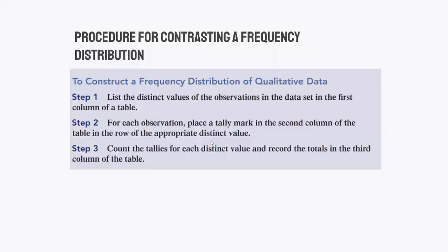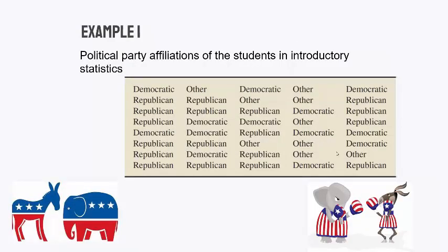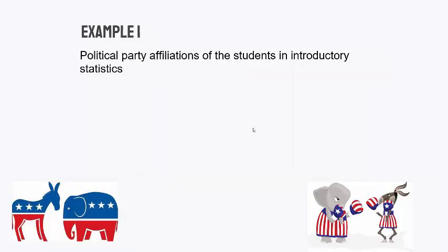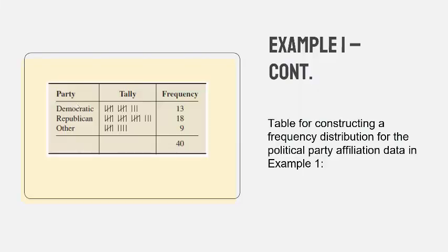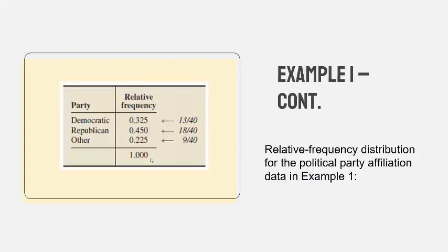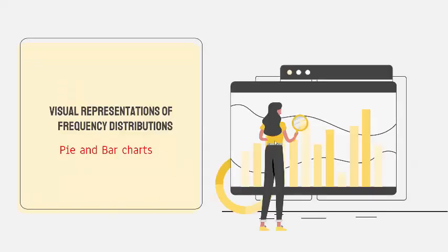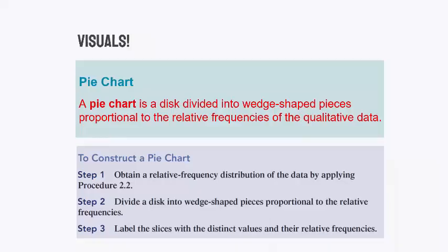To summarize so far: I started with a raw set of 40 qualitative data values, took them and summed them into a nice table showing the count of each, and then a table showing the relative frequency of each. Now we want to do visual representations. When you have qualitative data, there are two primary ways: a pie chart and a bar chart — both straightforward and simple.